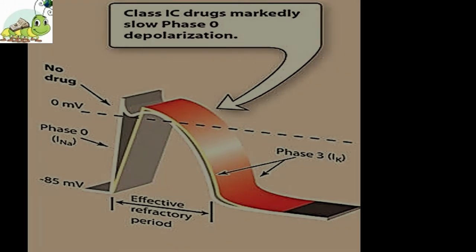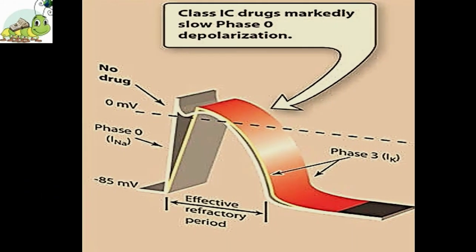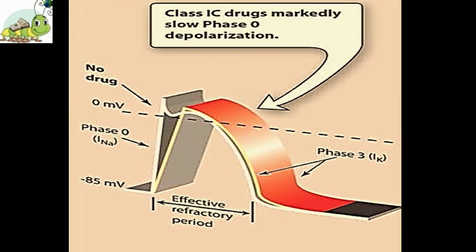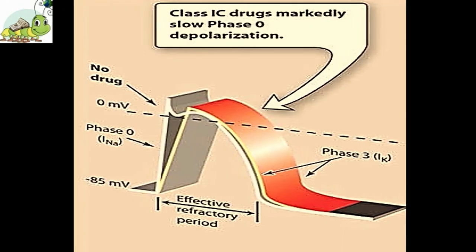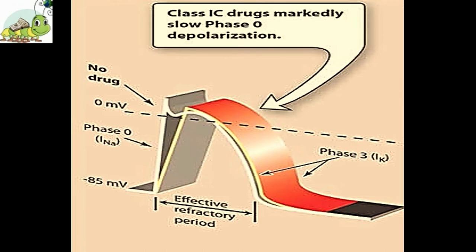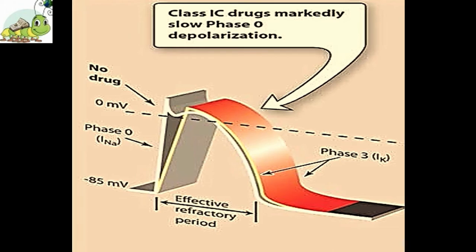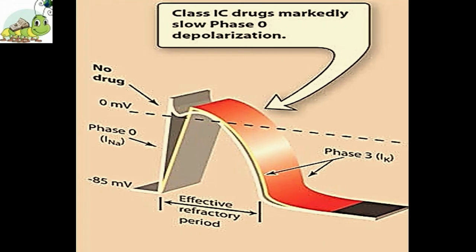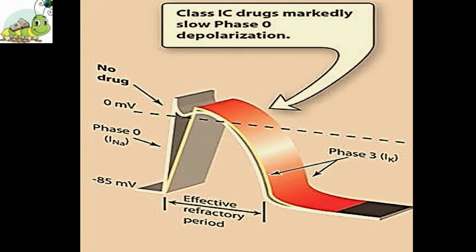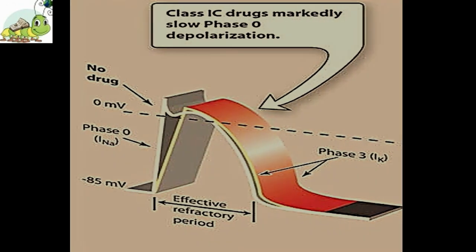Electrophysiological actions: As with all members of its class, propafenone has its major effect on the fast inward sodium current. The class 1c agents depress Vmax over a wide range of heart rates and shift the resting membrane potential in the direction of hyperpolarization. Class 1c agents bind slowly to the sodium channel and dissociate slowly; therefore, they exhibit rate-dependent block. Inhibition of the sodium channel throughout the cardiac cycle will result in a decrease in the rate of ectopy and triggered ventricular tachycardia.